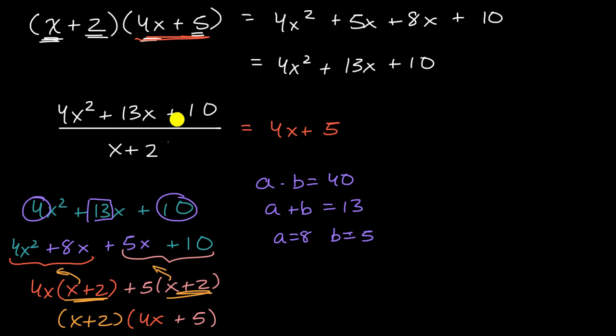You could rewrite this expression involving division, sometimes called a rational expression, as (x+2)(4x+5) over (x+2). As long as x does not equal -2, we can divide the numerator and denominator by (x+2), and we're left with 4x+5, with x not equaling -2.